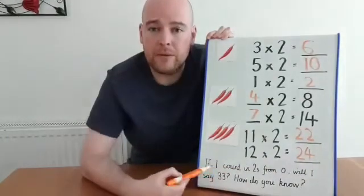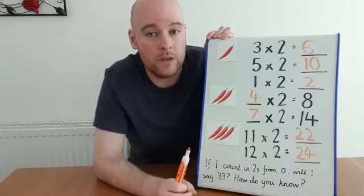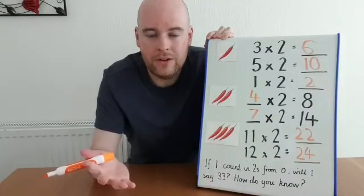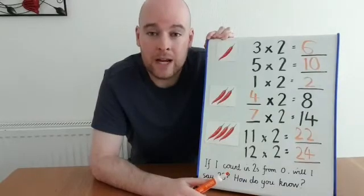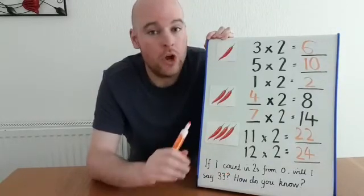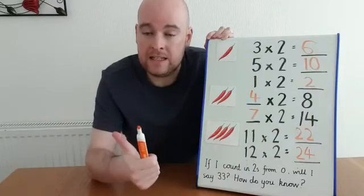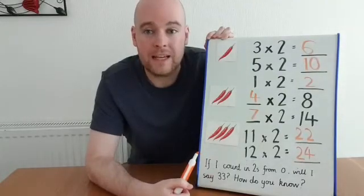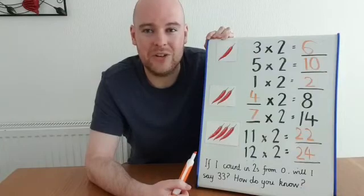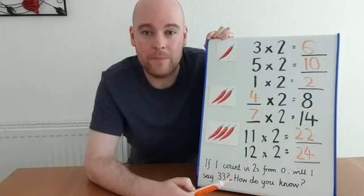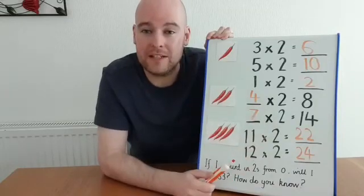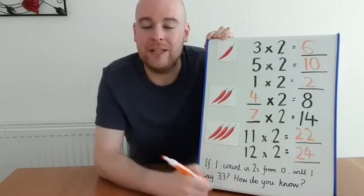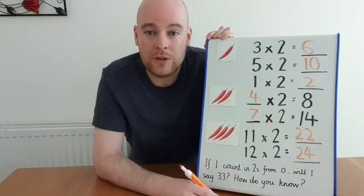Well done. Did any of you have a little think about whether, if you counted in twos from zero, would you say the number 33? Hopefully you worked out that no, you wouldn't. Why wouldn't you? Because 33 is an odd number — it ends in a three. And we know from our work at the start, when we count in twos we only say even numbers ending in zero, two, four, six, or eight. Because 33 has three ones, it is an odd number — we won't say it counting in twos. Well done for your hard work today. Hopefully you're feeling a little bit more confident with the two times table, but it's always worth going back to the counting stick again just to keep practising. Well done and see you again soon. Bye.